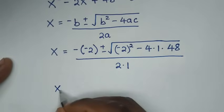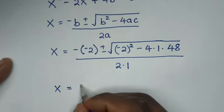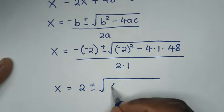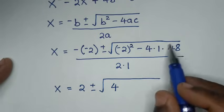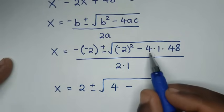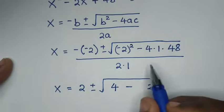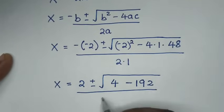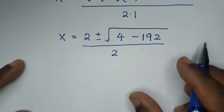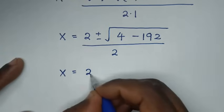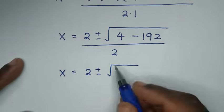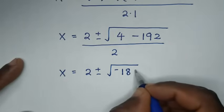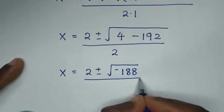Simplifying: negative of negative 2 is positive 2. Under the square root: (negative 2) squared is positive 4, and 4 times 1 times 48 is 192. So we have x equals 2 plus or minus square root of (4 minus 192), all over 2. That gives x equals 2 plus or minus square root of negative 188, over 2.